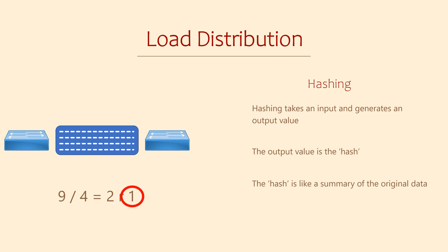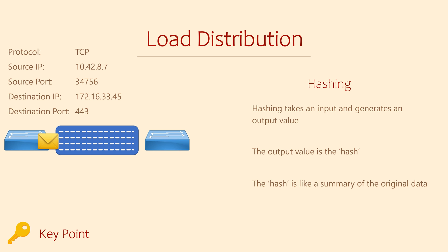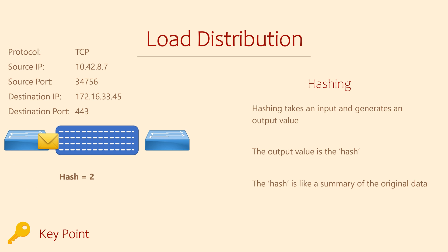So what's this got to do with EtherChannels? Think about a frame that needs to be forwarded across the EtherChannel. The switch will look at the frame's details — things like source and destination MAC address, IP addresses, and port numbers. It will run them through a hashing algorithm and generate a hash value. To keep it simple, let's imagine a hash value will always be 1, 2, 3, or 4. The switch will assign certain hash values to particular physical links in the EtherChannel, so a frame with hash value 1 may be sent on physical link 1, hash value 2 on link 2, and so on.